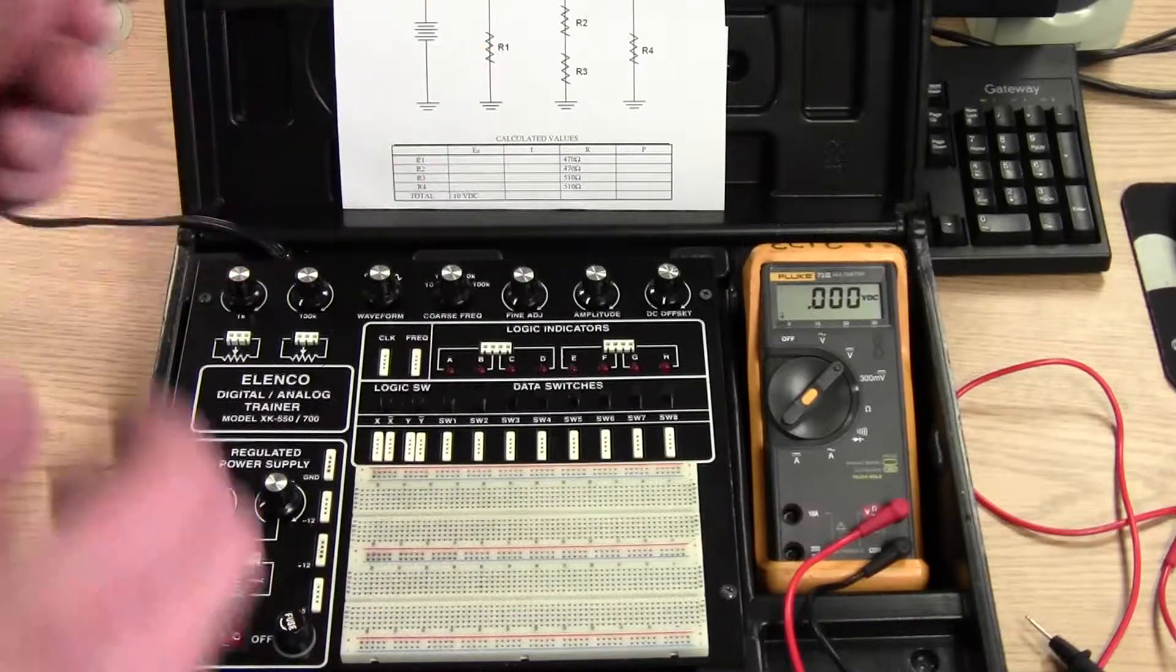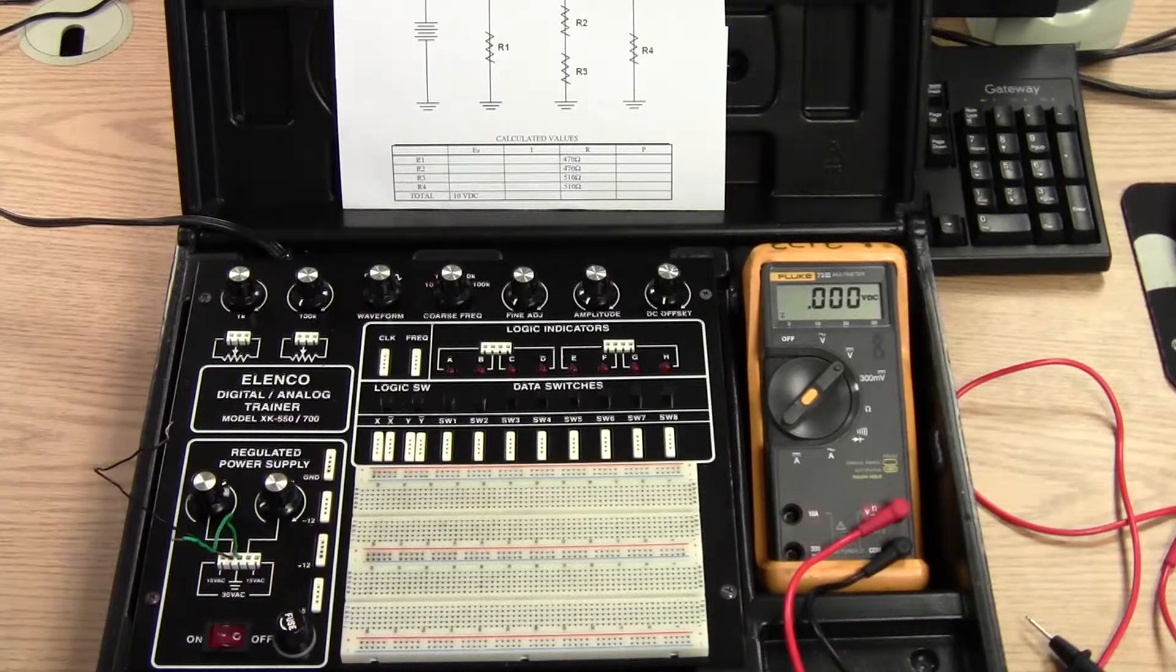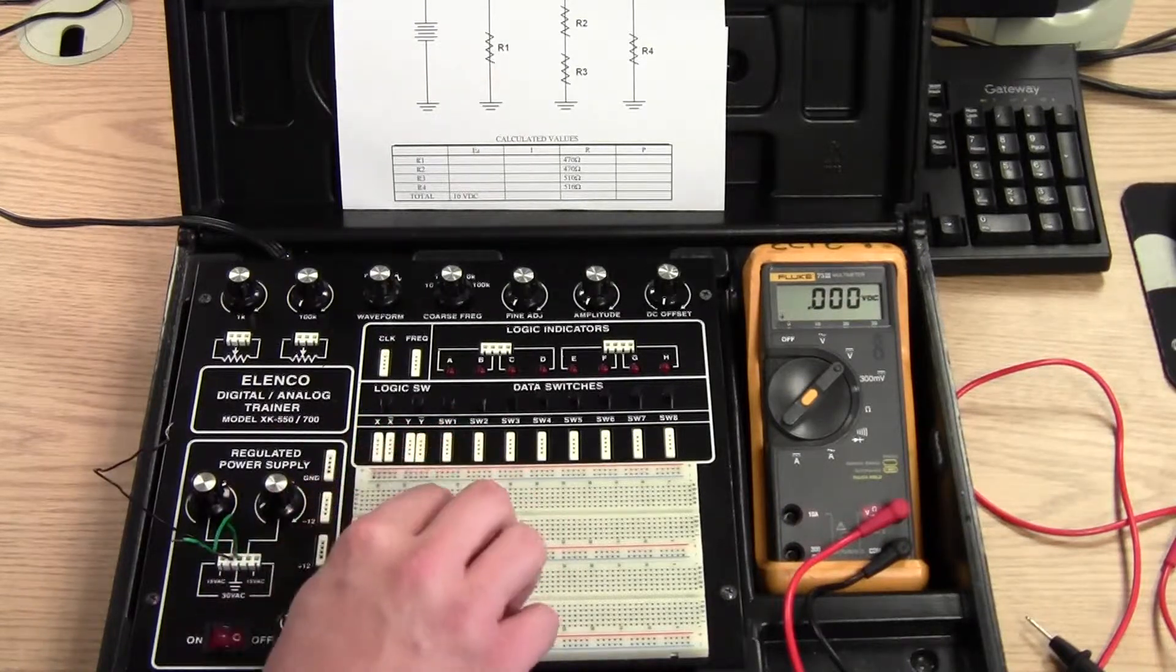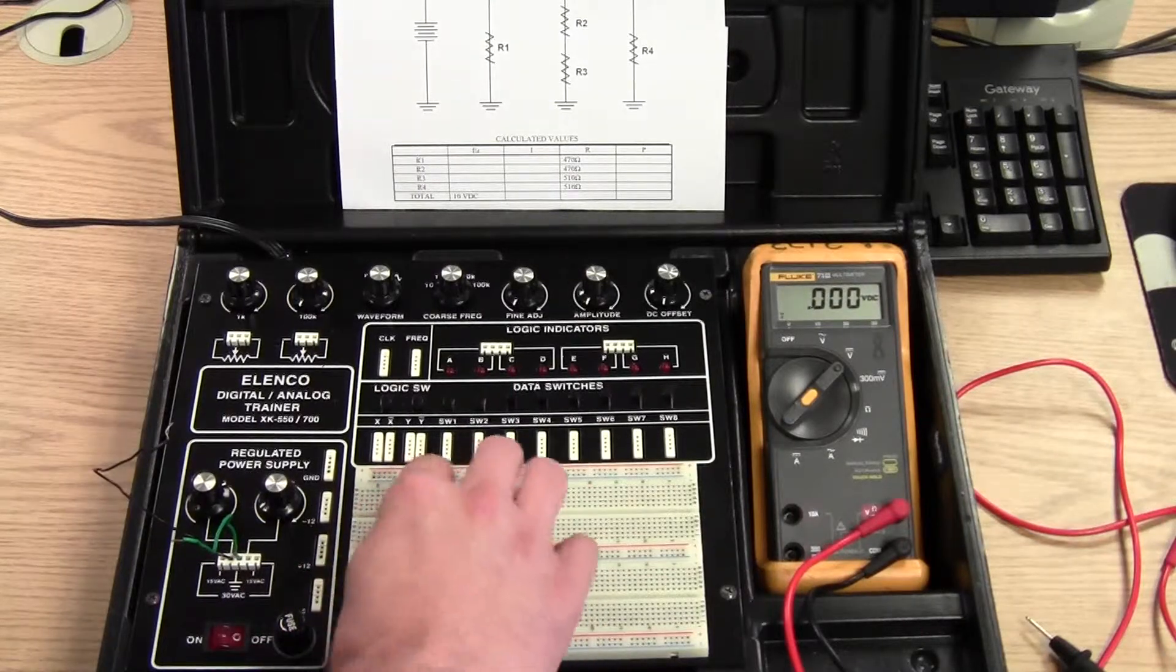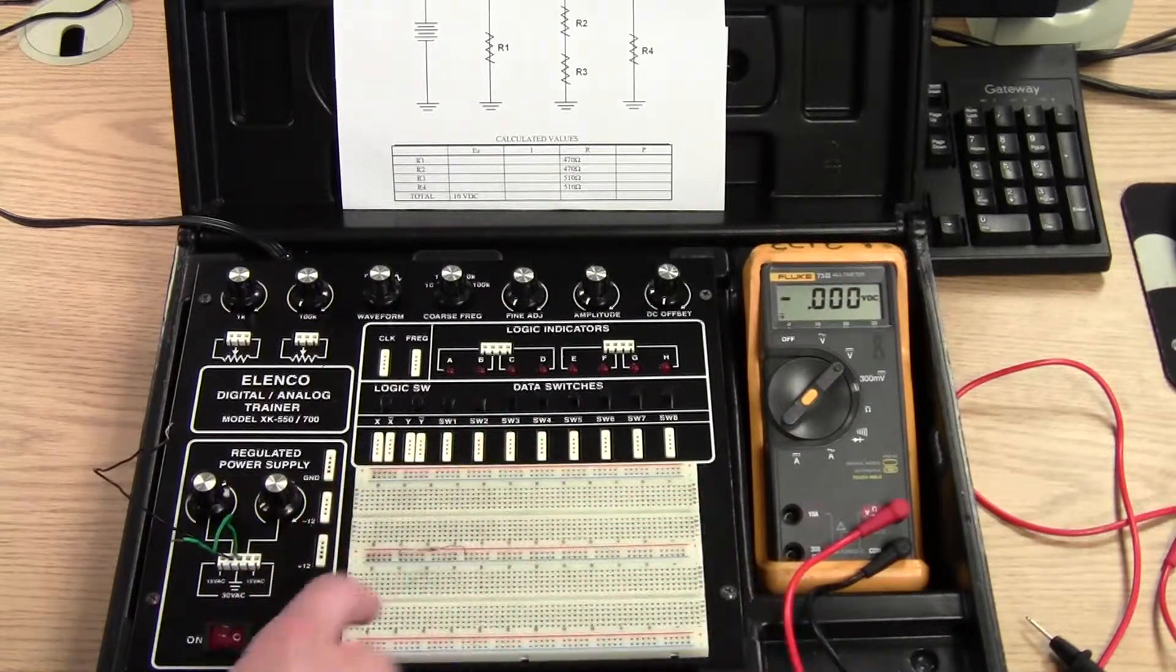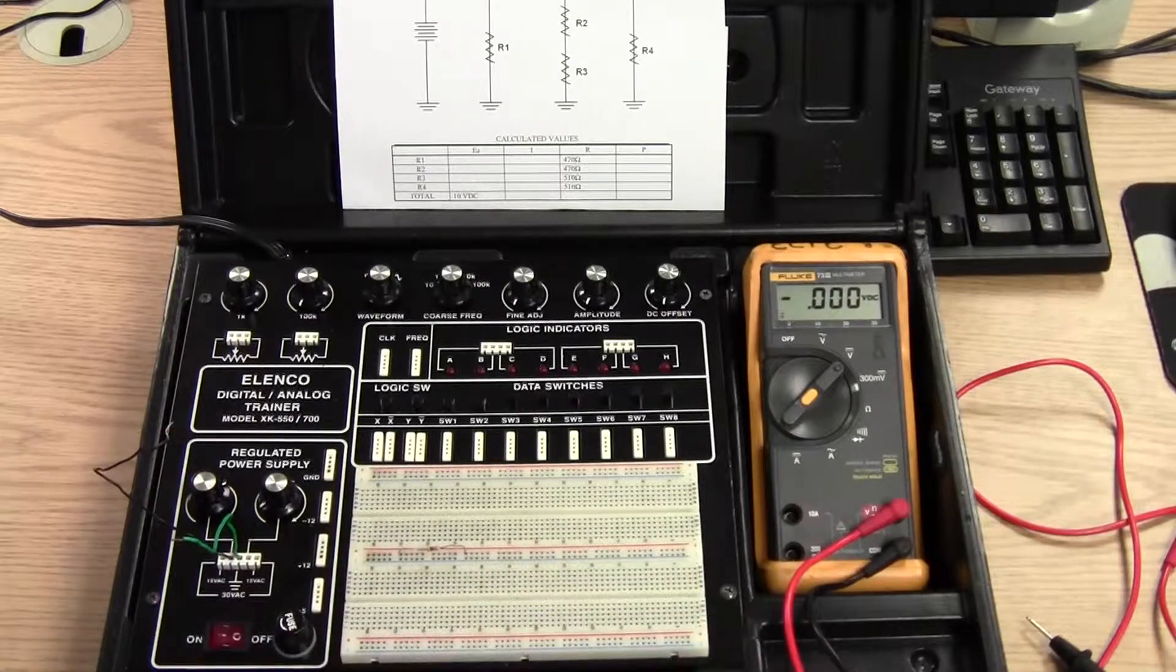And R1 is a 470 ohm resistor. It's in parallel so there would be nothing special about it. One lead's going to go from the positive strip here on the board to the negative strip on the board.